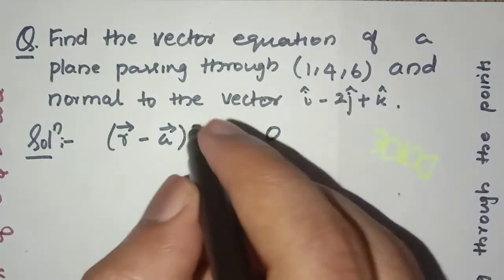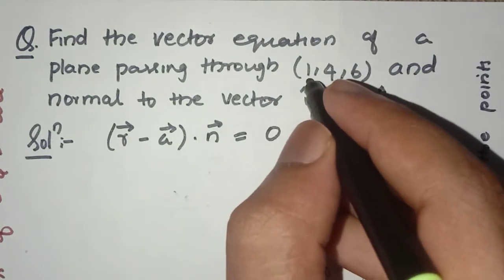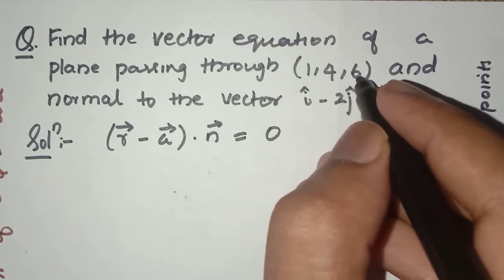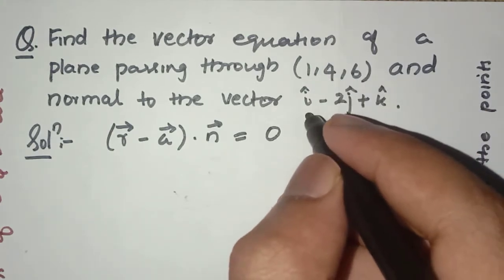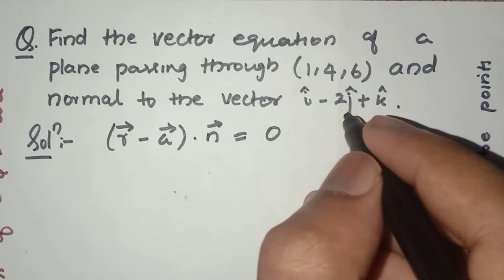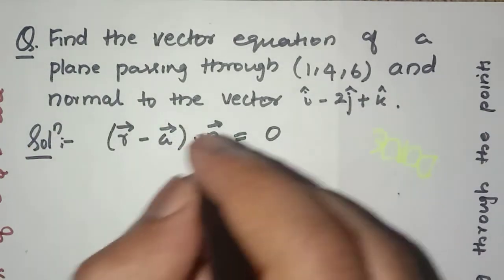So here a vector will be i cap plus 4j cap plus 6k cap, and n vector will be equal to i cap minus 2j cap plus k cap.